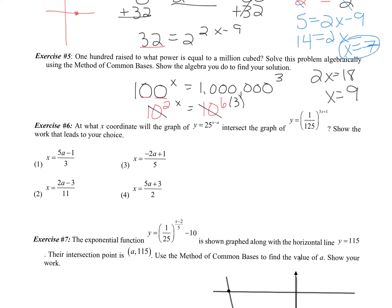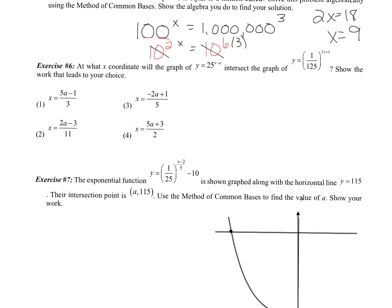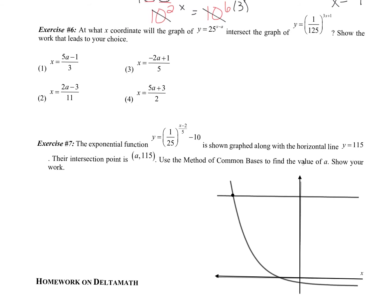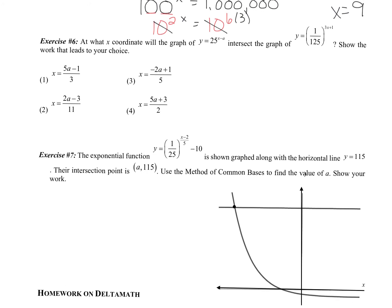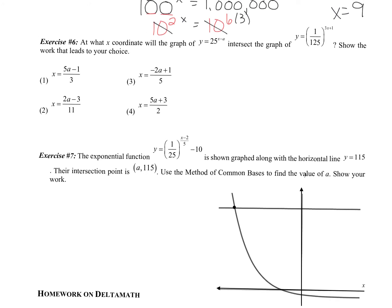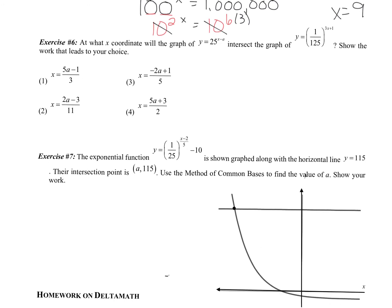Exercise 6 is another system having to do with graphing. It says at what x coordinate will the graph of y equals 25 to the x minus a intersect the graph of y equals 1 over 125 to the 3x plus 1. We have an a in here too, which is going to make this one a little bit more complicated. But I know if I want to find where they intersect, I just need to set them equal to each other.